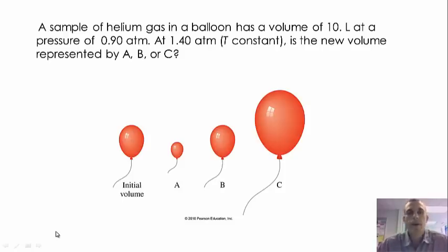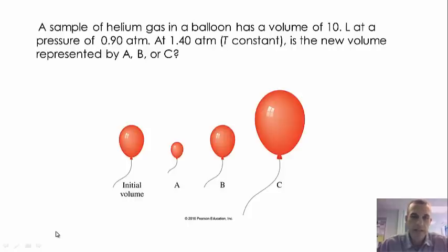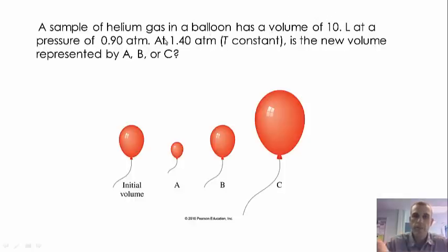Here's a sample question: a sample of helium gas in a balloon has a volume of 10 liters at a pressure of 0.9 ATMs. At 1.4 ATMs, with temperature held constant, is the new volume represented by balloon A, B, or C? Our volume was initially 10 liters and pressure was 0.9. We've increased the pressure — so which balloon, A, B, or C, would be our answer?